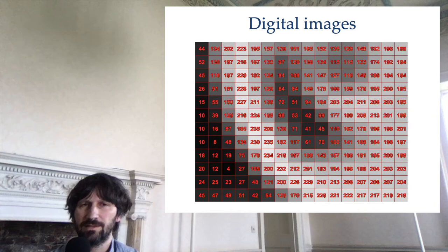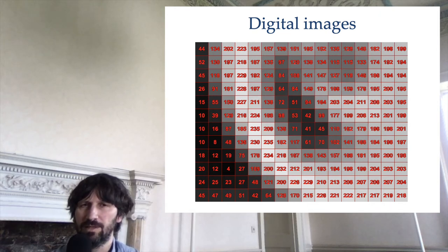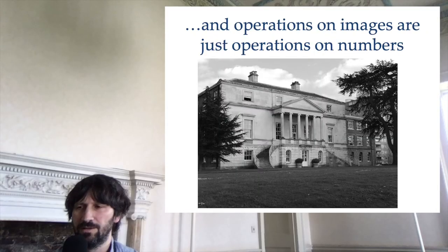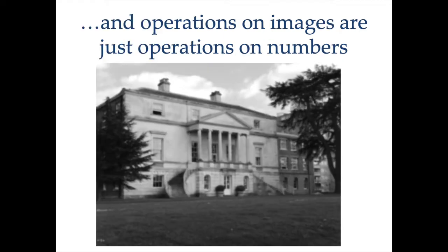We have seen that images are stored as a matrix of numbers, and many image operations are just operations on numbers. For instance, one operation is that for each pixel, you replace its value with the average value of all the pixels in a certain neighborhood — for instance, in a square of a certain size around the pixel. And can you guess what happens? Here is the result: this is a blurring operation, because you replace the pixel value with an average of its neighborhood, essentially blurring all the edges and smoothing the information a little bit in space.